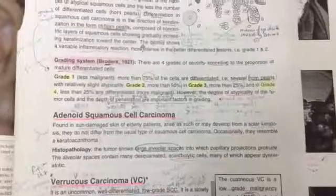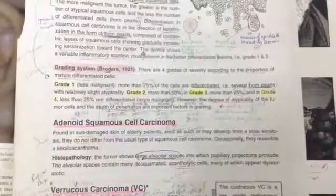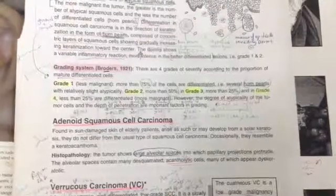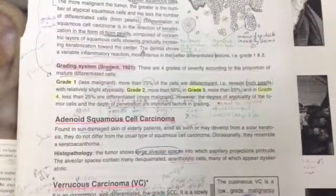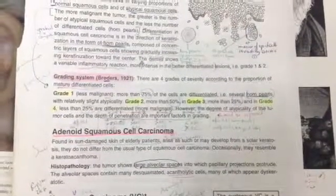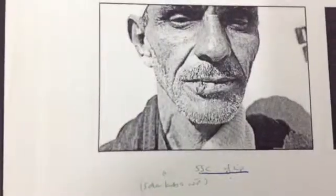Adenoid squamous cell carcinoma occurs in sun-exposed skin in elderly patients, developed as such or on solar keratosis. It doesn't differ from the usual type of squamous cell carcinoma, occasionally resembling keratoacanthoma. Histopathologically, there are large alveolar spaces with papillary projections that protrude, and the alveolar spaces contain many desquamated acantholytic cells. This is squamous cell carcinoma of the lip and verrucous squamous cell carcinoma.